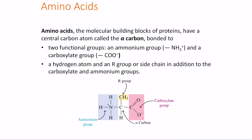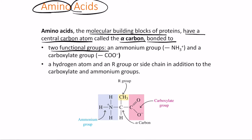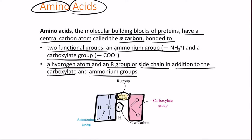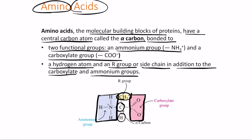The building blocks of proteins are amino acids. Amino acids have a central alpha carbon bonded to two functional groups — an ammonium ion (NH3+) and a carboxylate group (COO−) — plus a hydrogen atom and a variable R group (side chain). The name 'amino acid' comes from the fact that it contains both an amine group and an acid group. The R group is what varies from one amino acid to another.